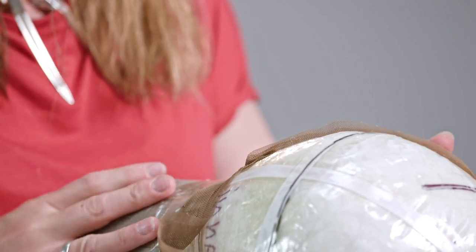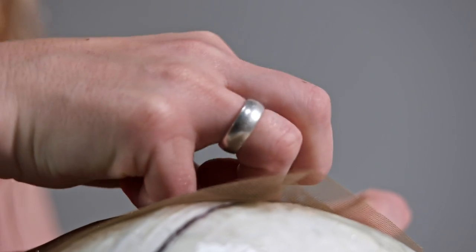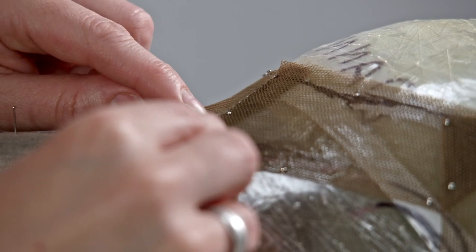This particular foundation has four sections. We start at the nape which we call the nape band. Each section is whipped together using a knotting hook and nylon.